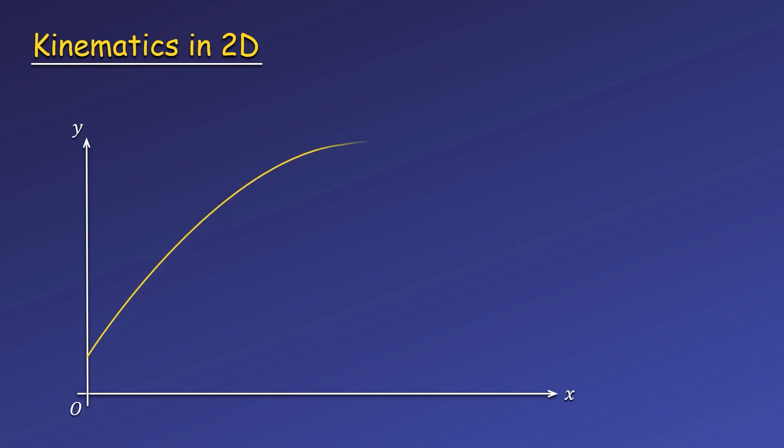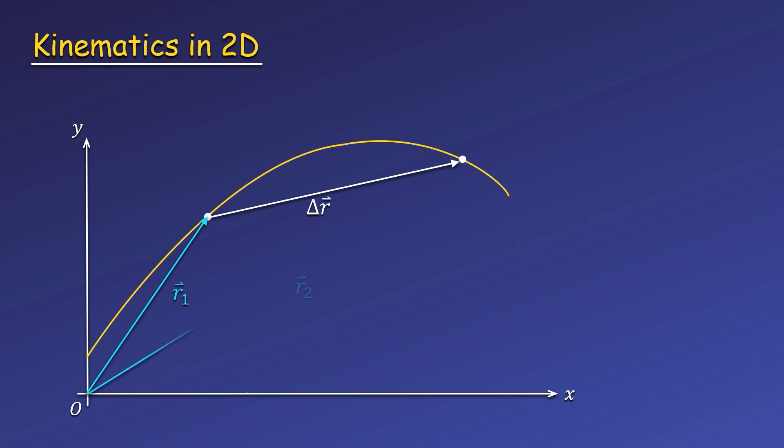You can also represent the position using a position vector that points from the origin to the object's location. If the object is displaced to a new position, we can represent this change in position as a displacement vector from the initial location to the final location. We can represent this new position with a second position vector.